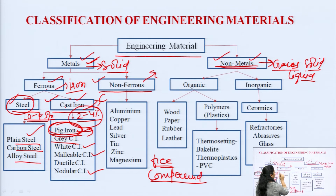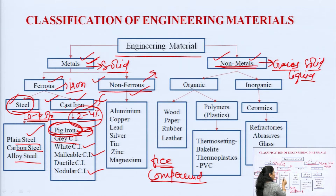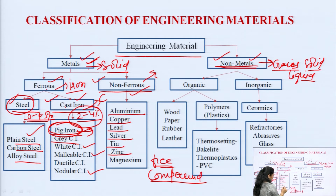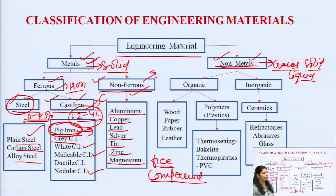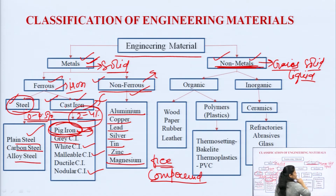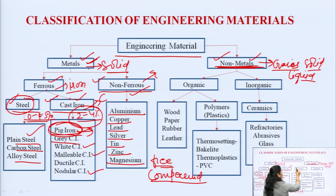In the case of non-ferrous metals, we have aluminium, copper, lead, silver, tin, zinc, and magnesium — these come under the category of non-ferrous metals.